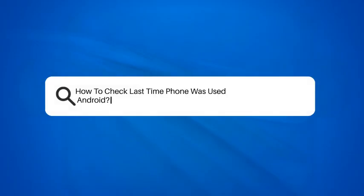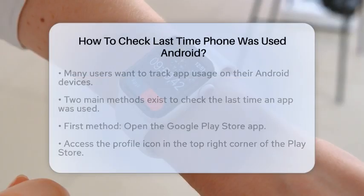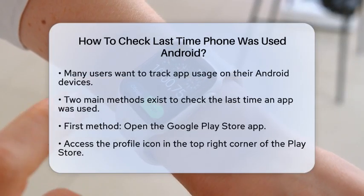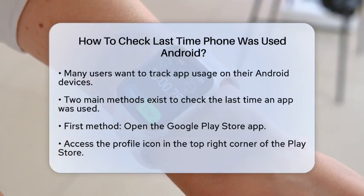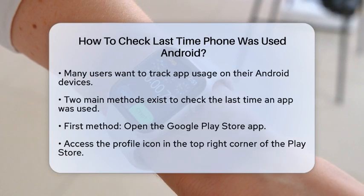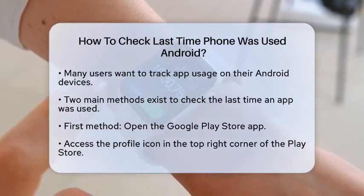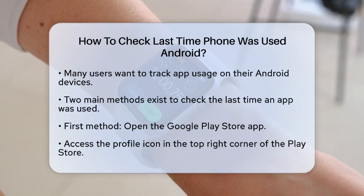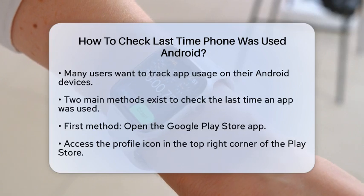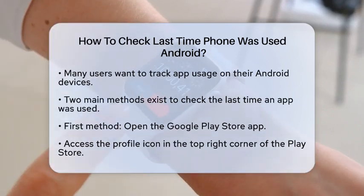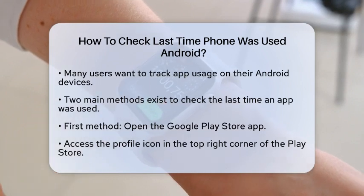How to check the last time a phone was used on Android. If you're curious about when you last used a particular app on your Android phone, you're not alone. Many of us want to keep track of our app usage to manage our time better or simply to stay informed. Here's how you can do it — you have a couple of methods to choose from, and both are quite straightforward.